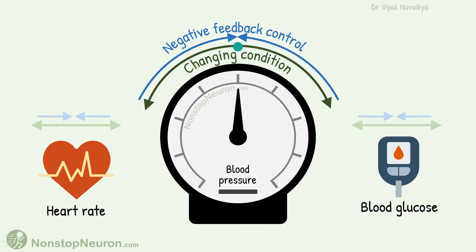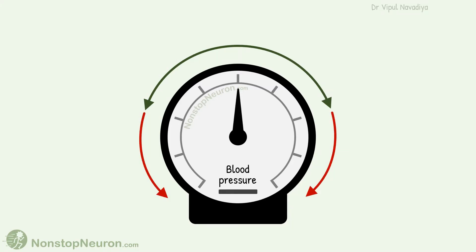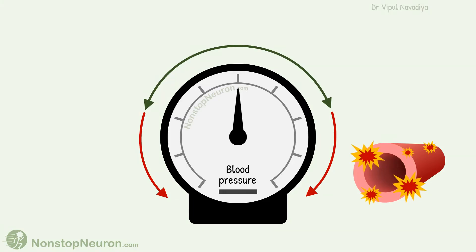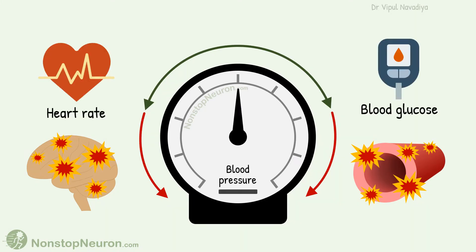This is basically how physiological parameters are controlled. Too much deviation from the physiological range produces harmful effects. For example, too much increase in blood pressure damages blood vessels, and too low blood pressure decreases oxygen supply to the brain. The same applies to all parameters — too much increase or decrease causes disease or death.